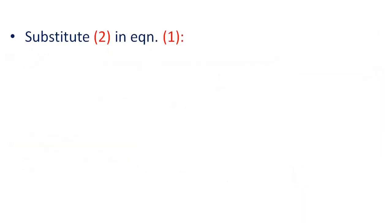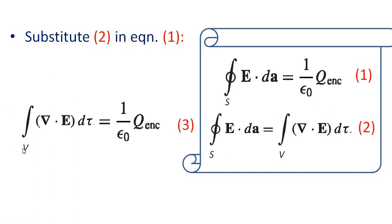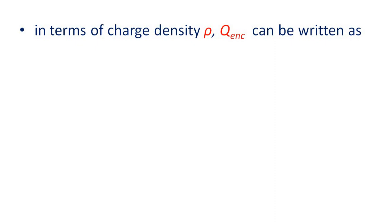Now substitute Equation 2 into Equation 1. From Equation 2, the closed surface integral of E dot dA equals the volume integral of divergence of E times d-tau. Substituting into Equation 1 gives: volume integral of divergence of E times d-tau equals 1 over epsilon-zero times q-enclosed. This is Equation 3. In terms of charge density rho, q-enclosed can be written as the volume integral of rho times d-tau.